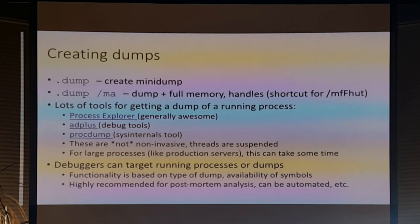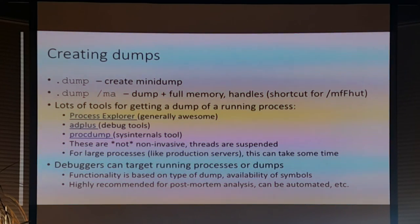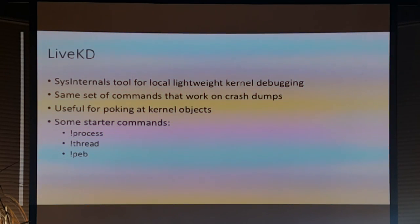Debuggers don't care if it's a running process or a dump — some things you can do on a live process aren't available on dumps but most of it is. You do need symbols, and you need to be able to do your .symfix and .sympath to pull down symbols for the environment in which the dump was taken so you can debug locally. You can totally automate dumps with various tools — set conditions inside Windows to generate dumps if your process crashes, and IIS's process manager can also play along, so it's pretty easy to get dumps in a production environment.